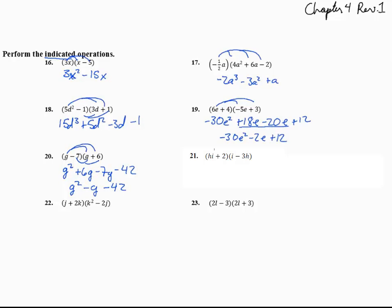And number 21, here we take hi, go to i, and we get hi squared. Hi goes to the negative 3h, and we get negative 3h squared i. 2 goes to i, and we have plus 2i. And then 2 goes to a negative 3h, and we get negative 6h. We have an hi squared there, h squared i there - they cannot combine. 2i, minus 6h.